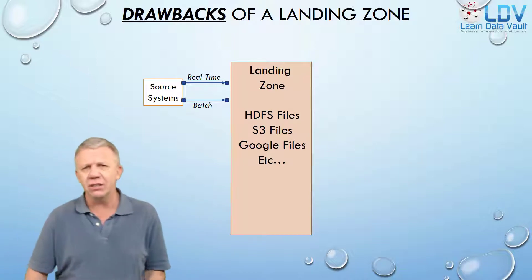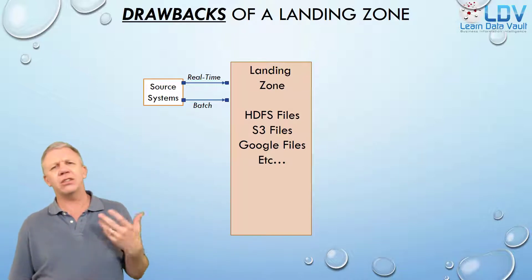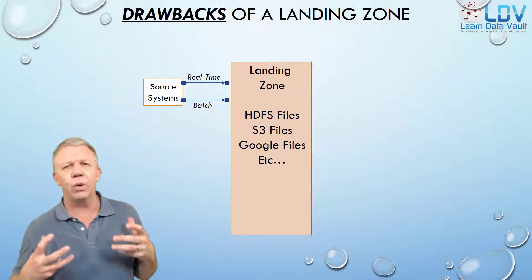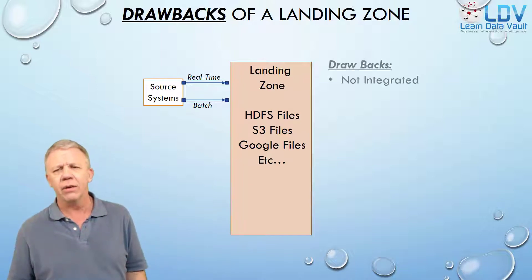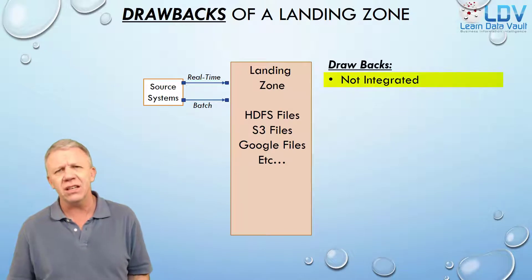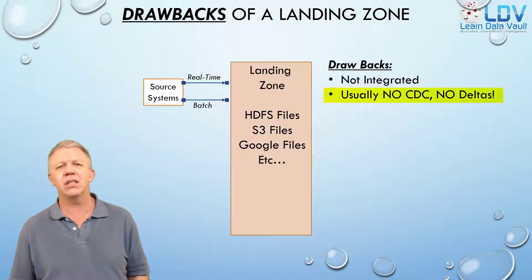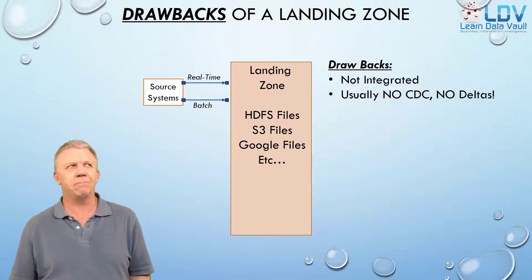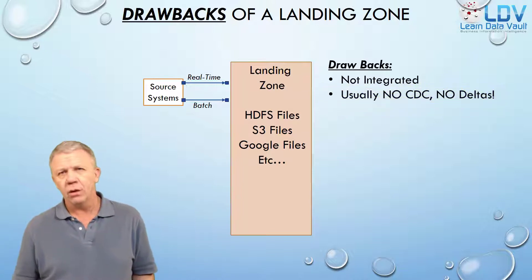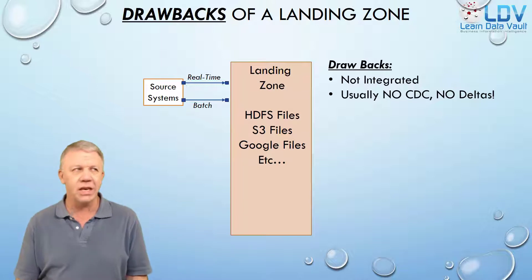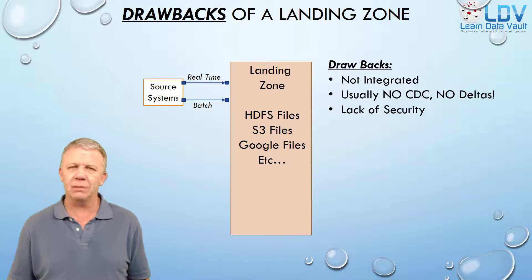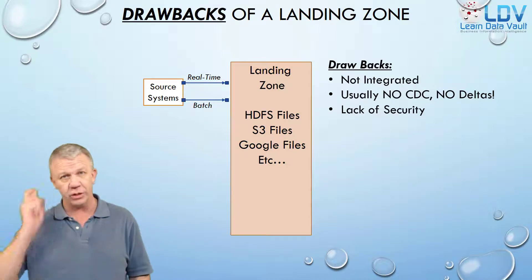So, what are some of the drawbacks of a landing zone? One of the drawbacks is the data set's not integrated — it's not like a data warehouse, it's just basically a data dump. It also doesn't usually contain CDC or change data capture — in other words, no deltas. If we don't have deltas, we have to take snapshots of the data sets and figure out what the deltas are, and then deal with add or join problems to get those deltas put together again.